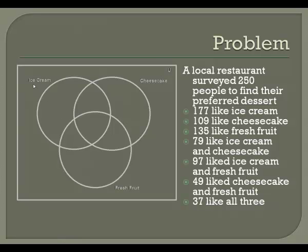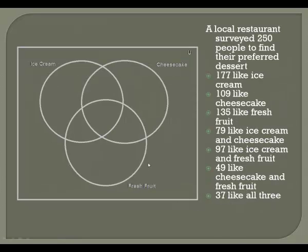I've got people who like ice cream, cheesecake, and fresh fruit. So let's start by putting some information in here. I've got 177 who like ice cream. Those 177 are somewhere in this circle, but I need more information because I don't know if they're here — people who only like ice cream — or here — people who like ice cream and cheesecake.